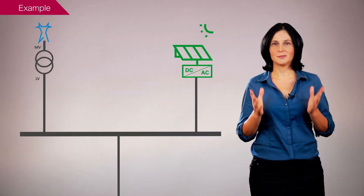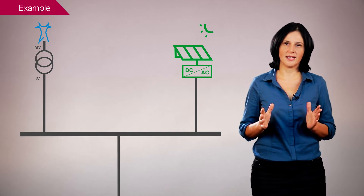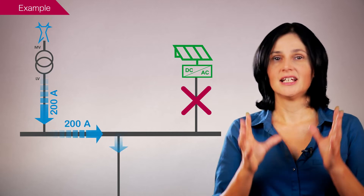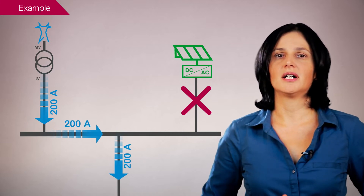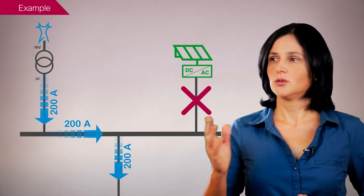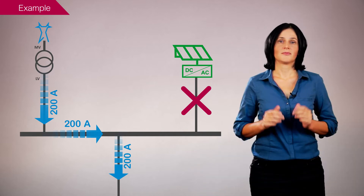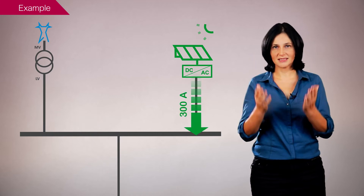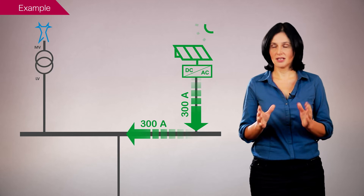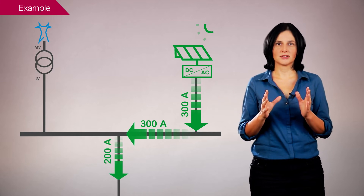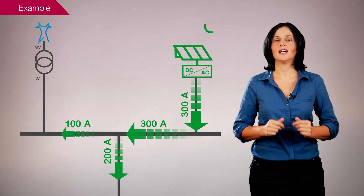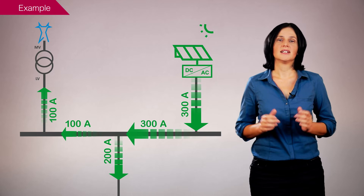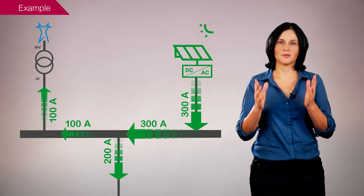Let's illustrate the potential variations when adding a photovoltaic system for self-consumption. When the installation is only powered by the grid, the current flowing through the main bus bar corresponds to the load consumption: 200 amps. When it's powered by both sources, the photovoltaic system supplies its maximum output capacity of 300 amps. 200 are used to feed the load and the extra 100 are injected to the grid. Therefore, in this example, the main bus bar should be sized for 300 amps.